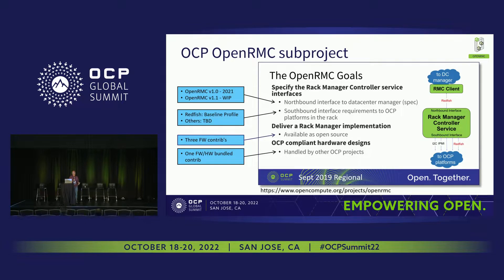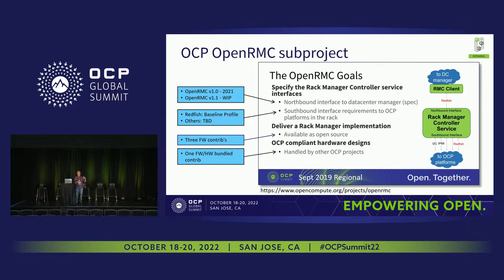Currently, it's in 2021 — that 1.0 was released — and we're in the process of releasing 1.1. Version 1.1 will add additional functionality. One of the reasons we started this within OCP was that it took a while for OpenRMC to exist.